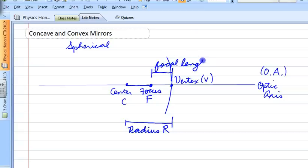So this focal length is labeled with an f. And the other geometry here is that the focal length is equal to half of the radius. And this will be important later on. This is just a definition.